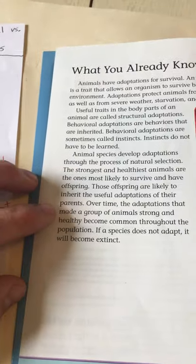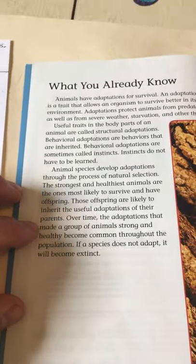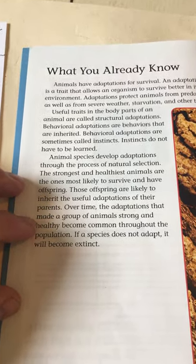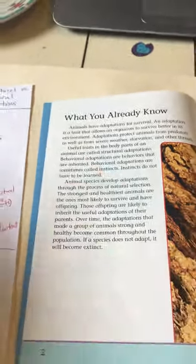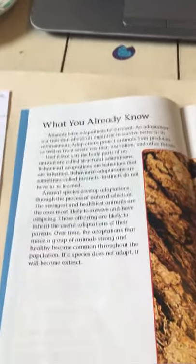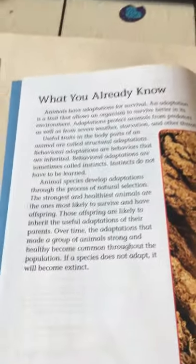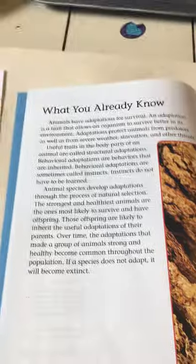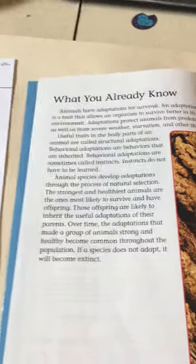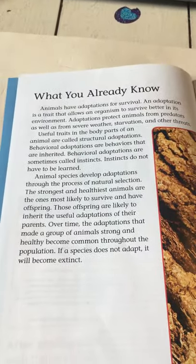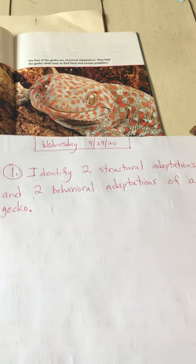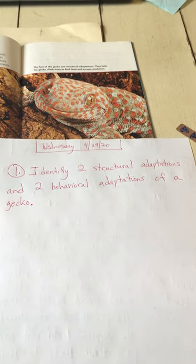What we talked about today is that over time, the adaptations that made a group of animals strong and healthy become common throughout the population. Those animals get strong and healthy traits from their parents, and before long the species is stronger than it would be — much more likely to survive in the wild. I'm excited to see what you put for the gecko assignment: two structural adaptations and two behavioral adaptations. Have a great day, see ya.